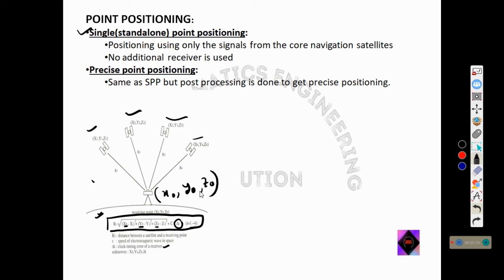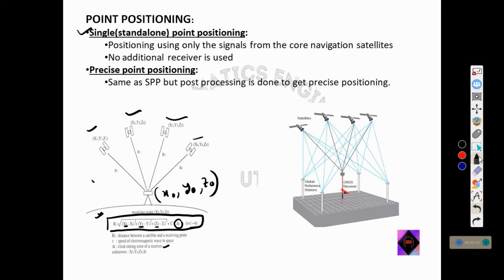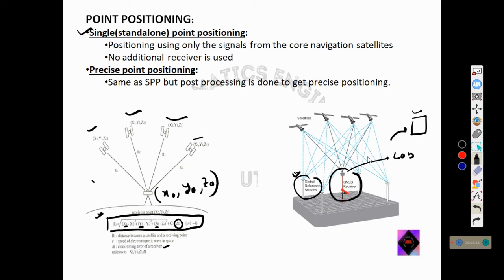This is a standalone point positioning system in which only one receiver is used. Now let us see precise point positioning (PPP). The technique is the same as standalone point positioning, but post-processing is done to get precise positioning. The GNSS receiver calculates the position the same way, but afterward the data is brought to a lab and post-processed using another global reference station, giving a more precise position. It is also a kind of differential GNSS technique.